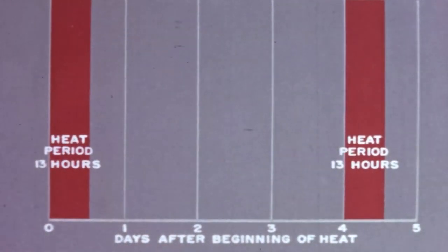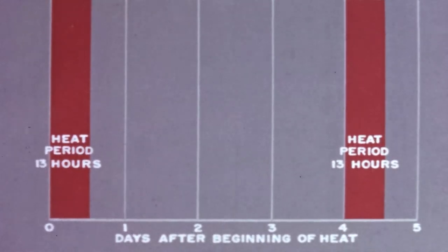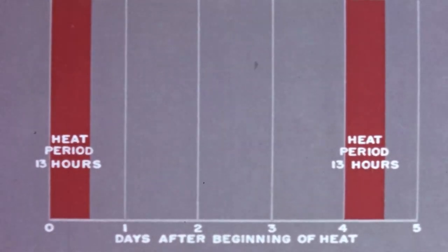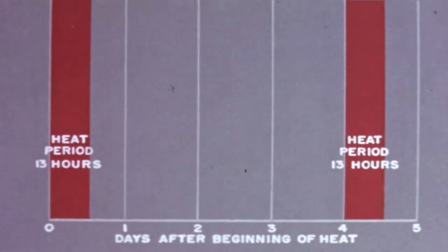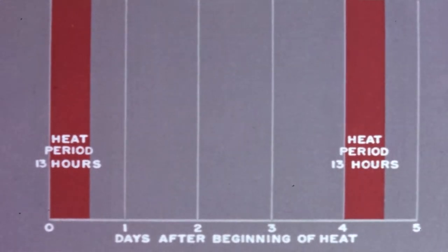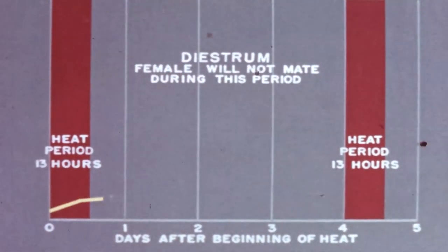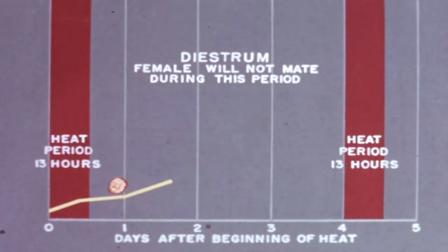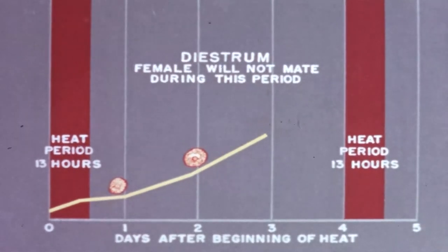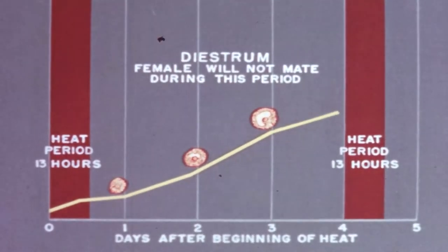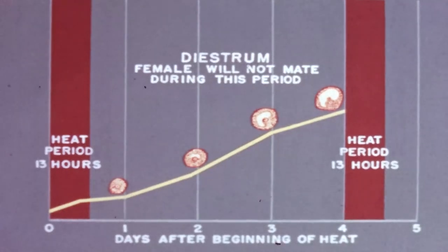Mature female rats separated from males repeat the estrus cycle throughout the year at intervals of approximately four days. The period of heat lasts on average 13 hours, and it is only during this interval that the female will mate. The interval between two periods of heat is usually called diastrum, during which ovarian follicles grow and secrete hormones to prepare the animal for the following period of heat and ovulation.